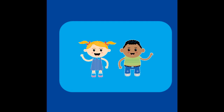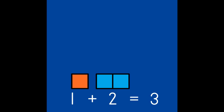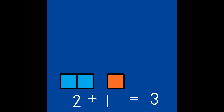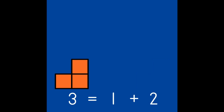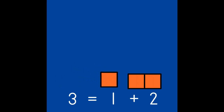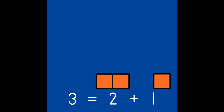One and two are partners of 3, because they go together to make 3. Just as partners who work together can switch places, number partners can switch places. We can say one and two are partners of 3, or we can say two and one are partners of 3. We can also say that 3 has partners 1 and 2, or that 3 has partners 2 and 1. So as you can see, it does not matter which partner comes first.